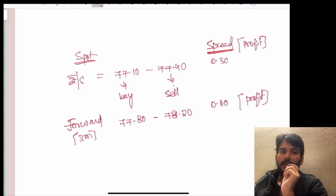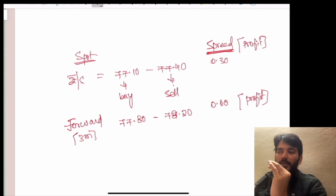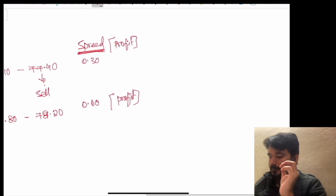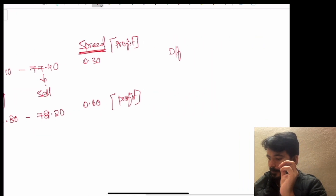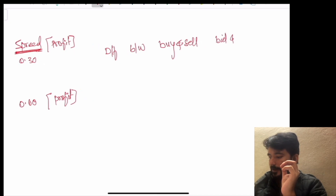The spread is the difference between buy currency and sell currency. The difference between bid and ask is your spread. Difference between bid and ask currency is your spread — whether in the spot market or the forward market.